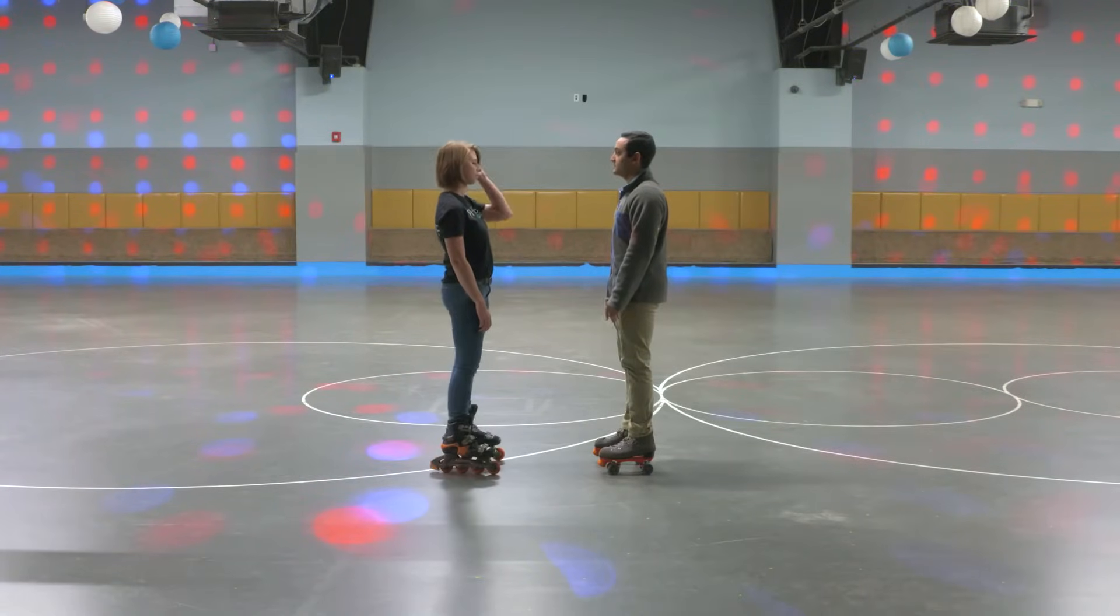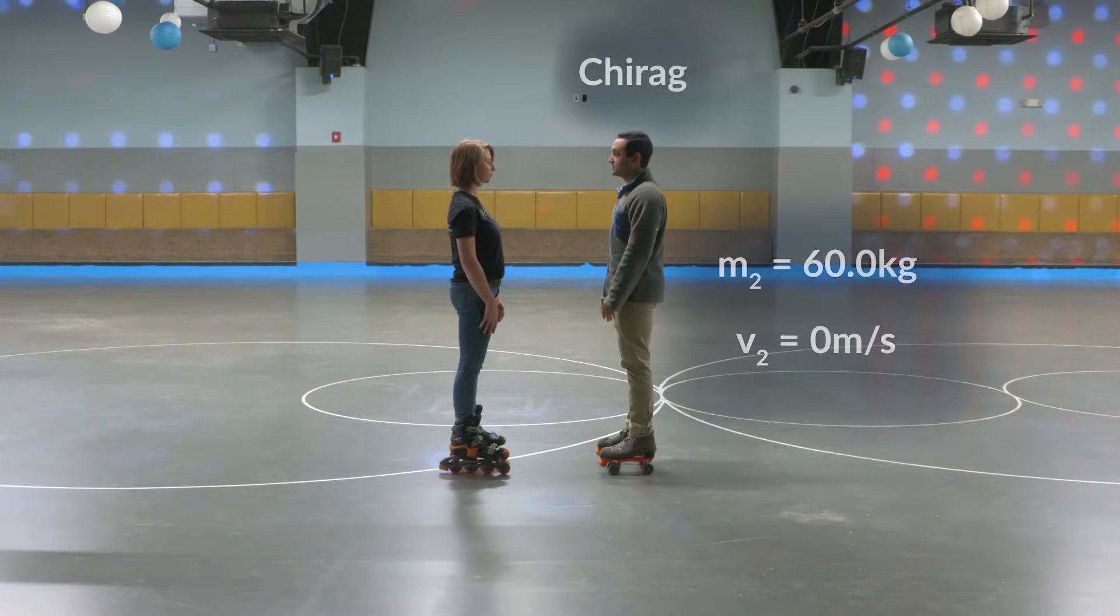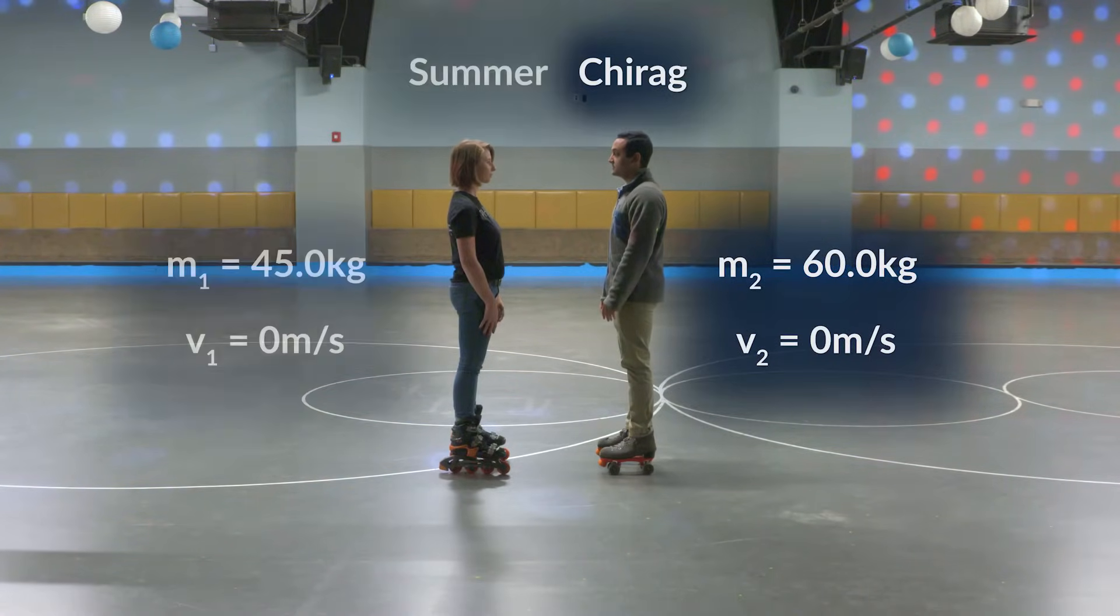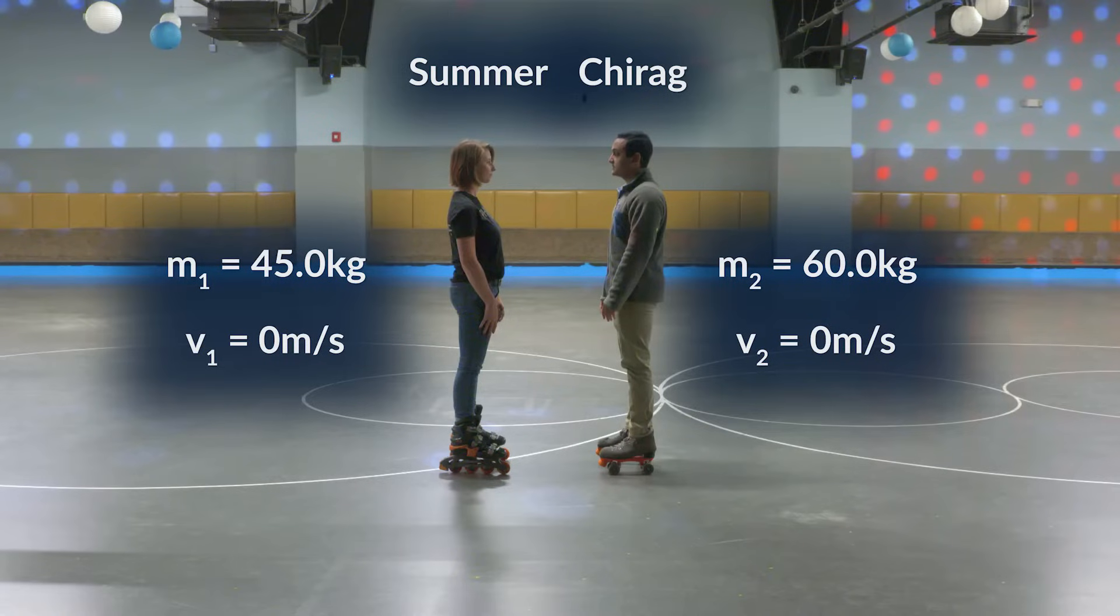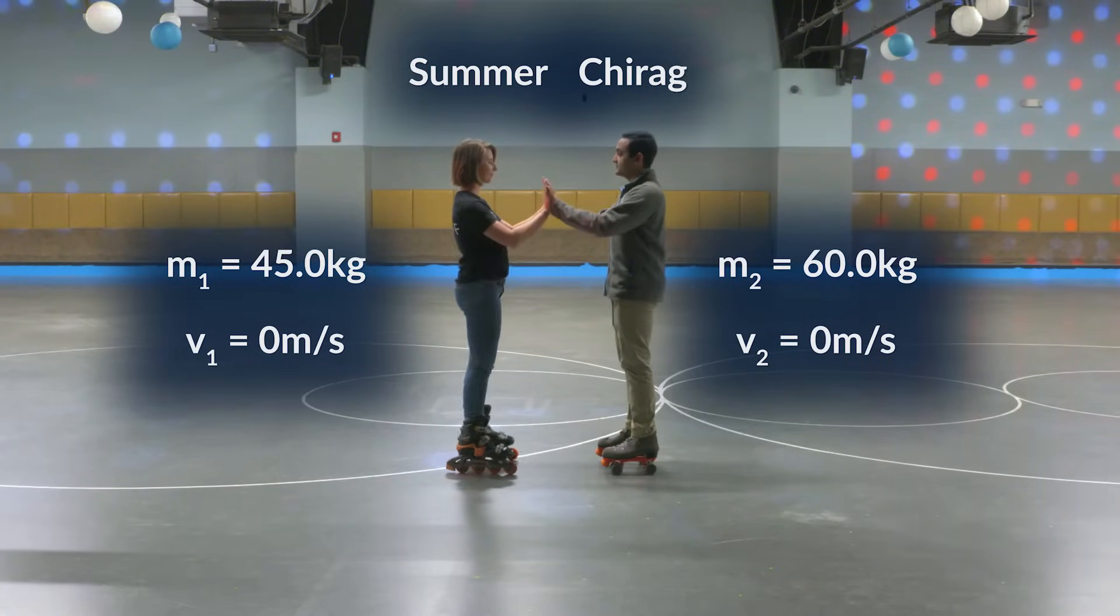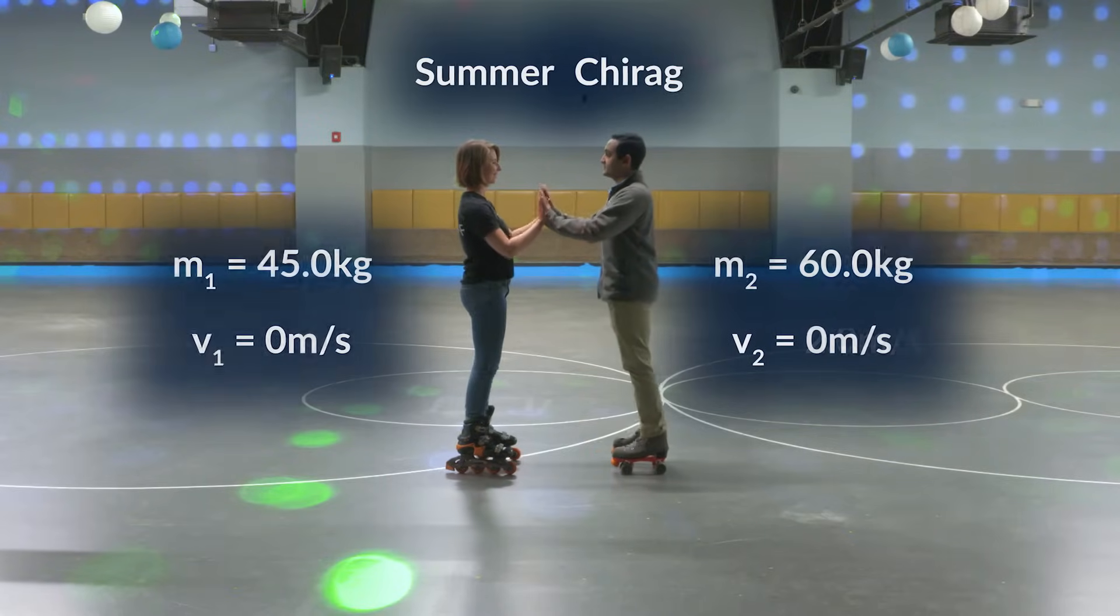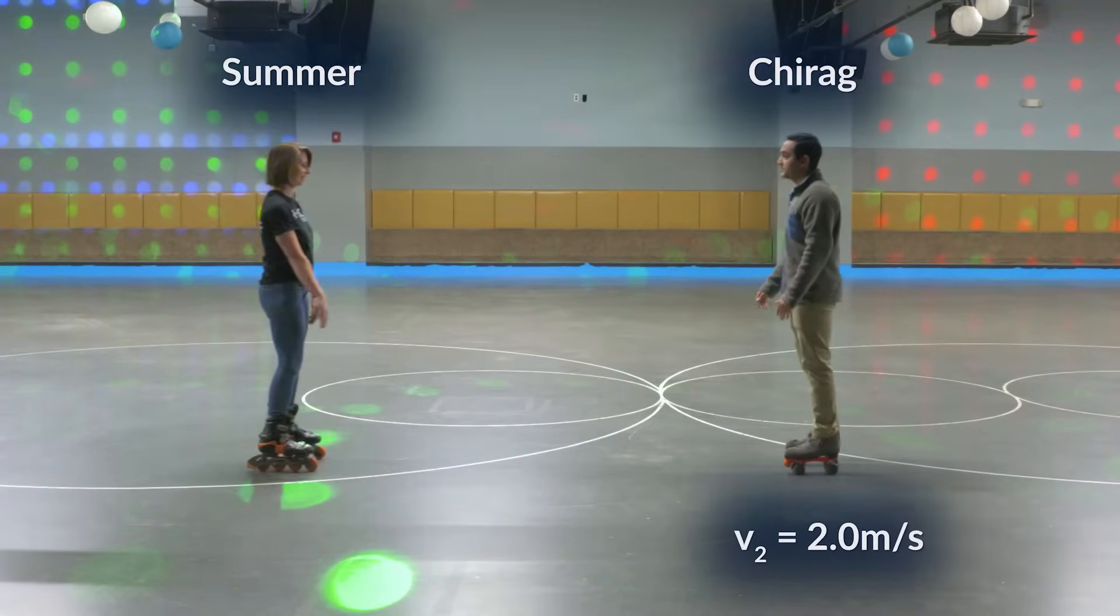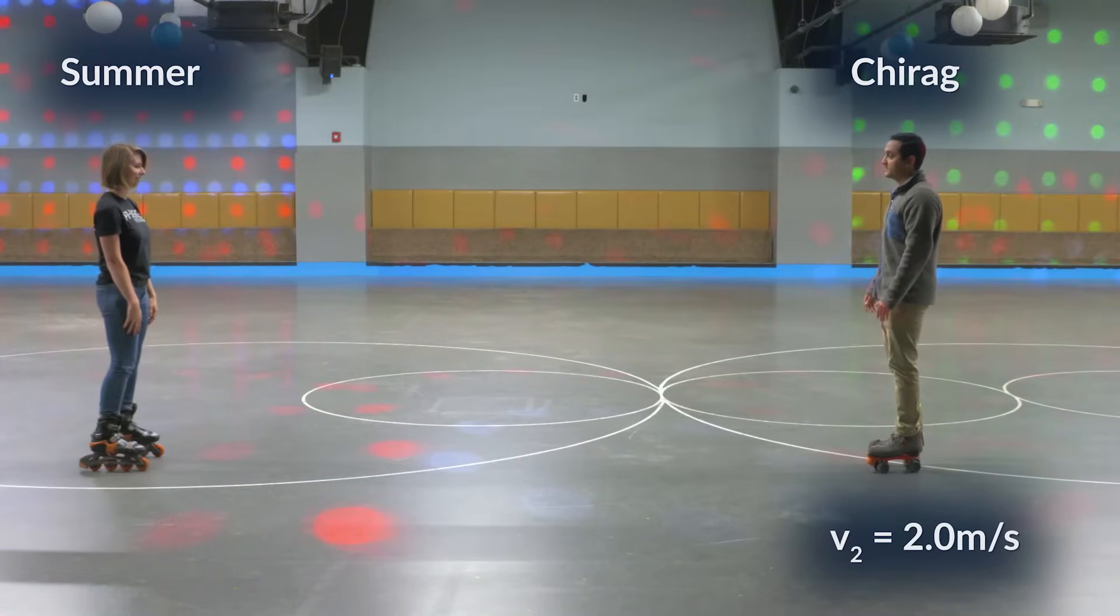Let's do one more where we can look at speed and direction, but this time we'll do it while roller skating. We have two people facing each other. Turag is 60.0 kilograms and Summer is 45.0 kilograms. Both are at rest. Okay, so put your hands together. Now push.